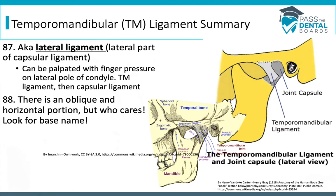The third ligament is the temporomandibular ligament. As seen previously, the joint capsule and the TM ligament go hand in hand — the TM ligament is also known as the lateral ligament because it's the lateral-most part of the capsular ligament. It can be palpated with finger pressure on the lateral pole of the condyle — you're touching the TM ligament first, and going a little deeper gets you to the capsular ligament. There's an oblique and a horizontal portion.